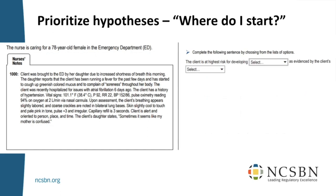For distractors, participants suggested: respiratory failure, ARDS, diabetes, UTI, hypertensive emergency. The item writer went with hypoxia, stroke, dysrhythmias, and pulmonary embolism. For the 'as evidenced by' second menu, be careful: if all the findings you list point hard to one condition, you give a big hint. When candidates open that second menu and see everything pointing to blood clots, they might say 'oh, maybe I should change my answer to pulmonary embolism.' So list evidence that points in multiple directions, not all to one place — we call giving hints 'cueing' in the testing world.